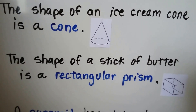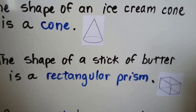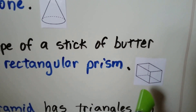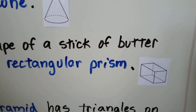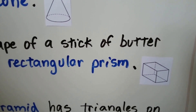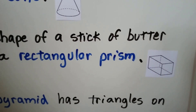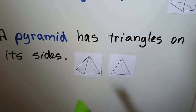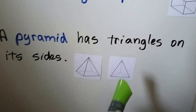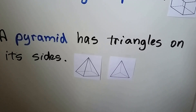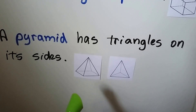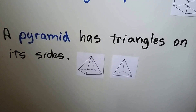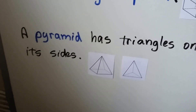The shape of a stick of butter is a rectangular prism — we can see through this one to see what it looks like behind. And a pyramid has triangles on all its sides. This one has a square bottom and this one has a triangle bottom — they call the bottom the base.